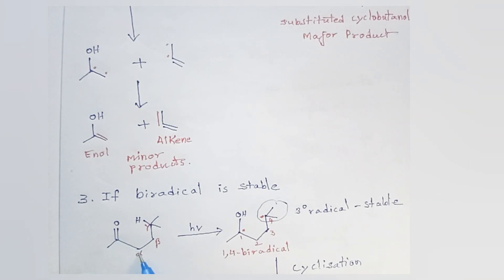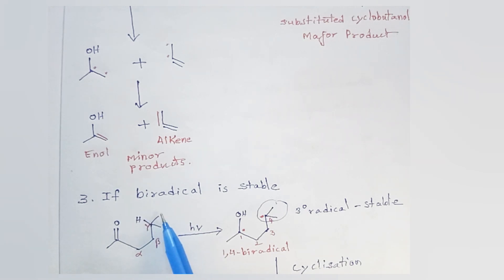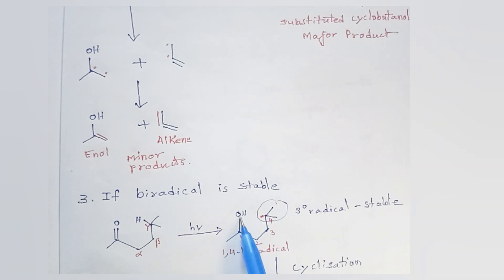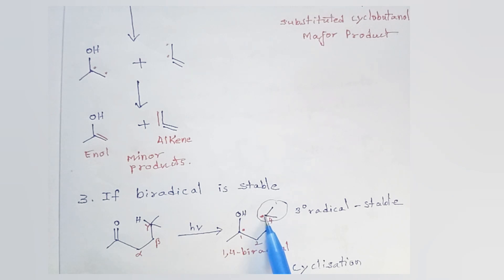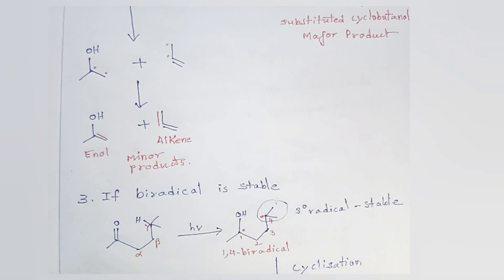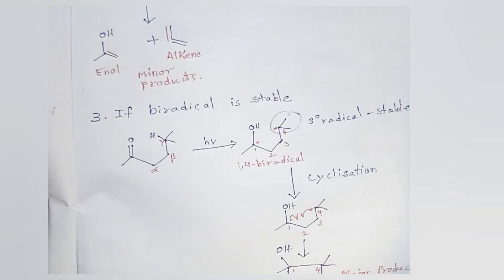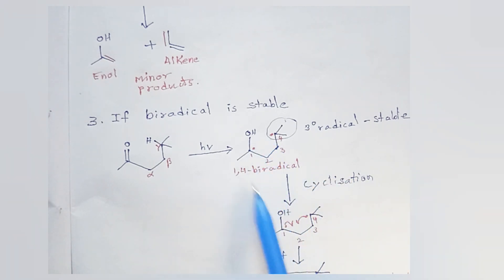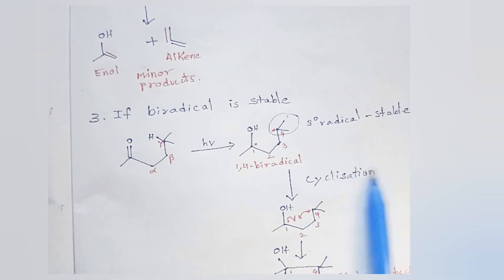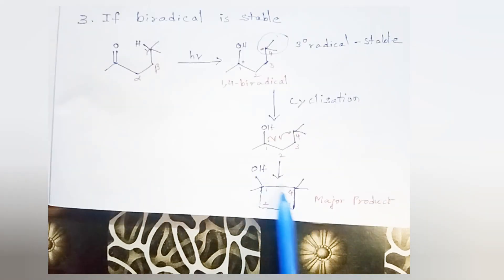This is the carbonyl compound: alpha, beta, gamma. This gamma carbon has two substituents, that is two CH3 groups. When the gamma hydrogen is abstracted by the oxygen atom, it forms a radical which is a tertiary radical — the radical is connected to two more carbon atoms. Tertiary radical is stable, so this biradical will undergo cyclization. This radical and this radical will come together to form a bond, giving us a substituted cyclobutanol as the major product.